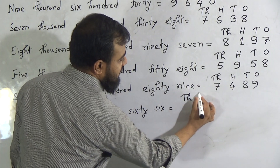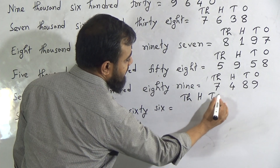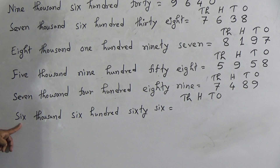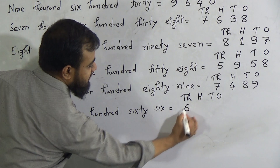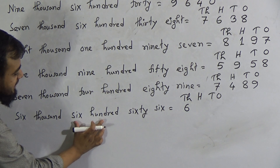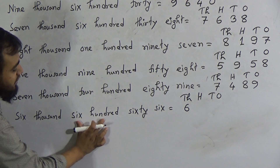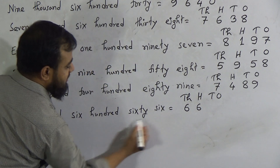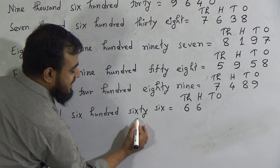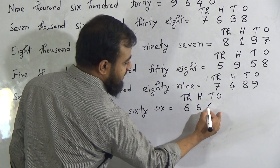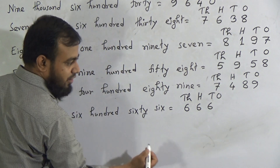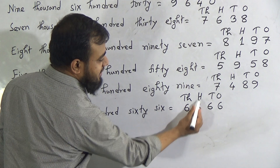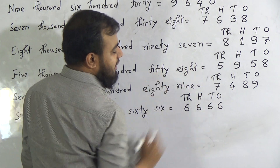The last number today is 6666. Again: Thousands, Hundreds, Tens, Ones. Six thousand means we write 6 in the thousands place. Six hundred means we write 6 in the hundreds place. For 66, we write 6 in the tens place (for 60) and 6 in the ones place. So 6666 is written as 6 | 6 | 6 | 6.